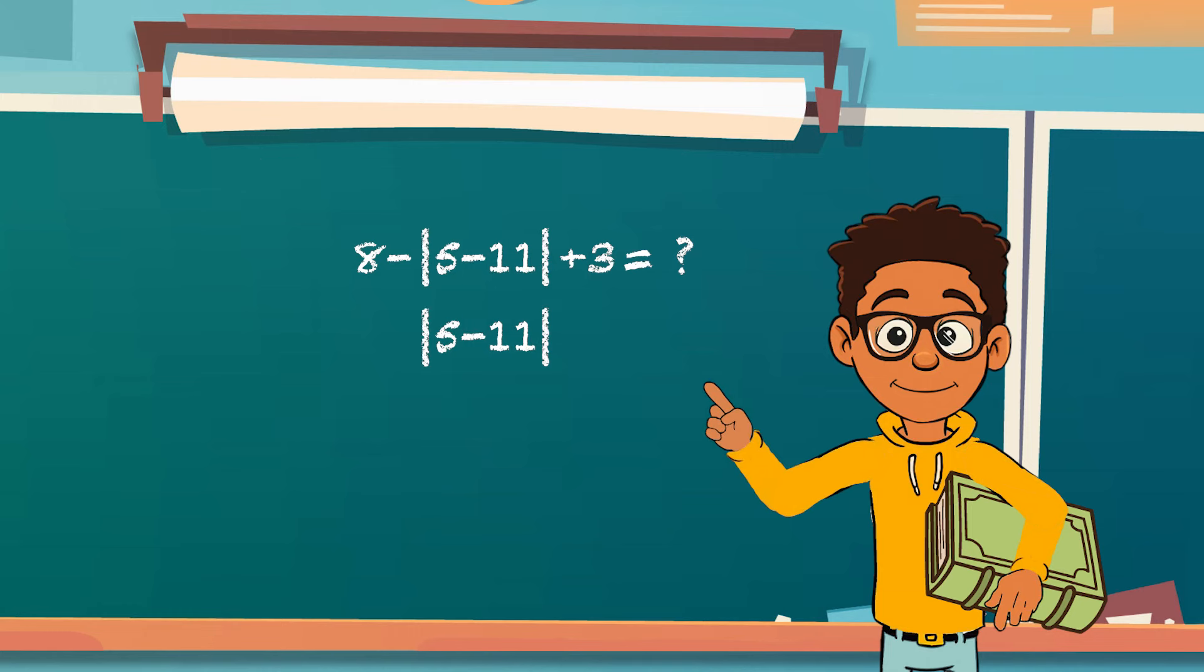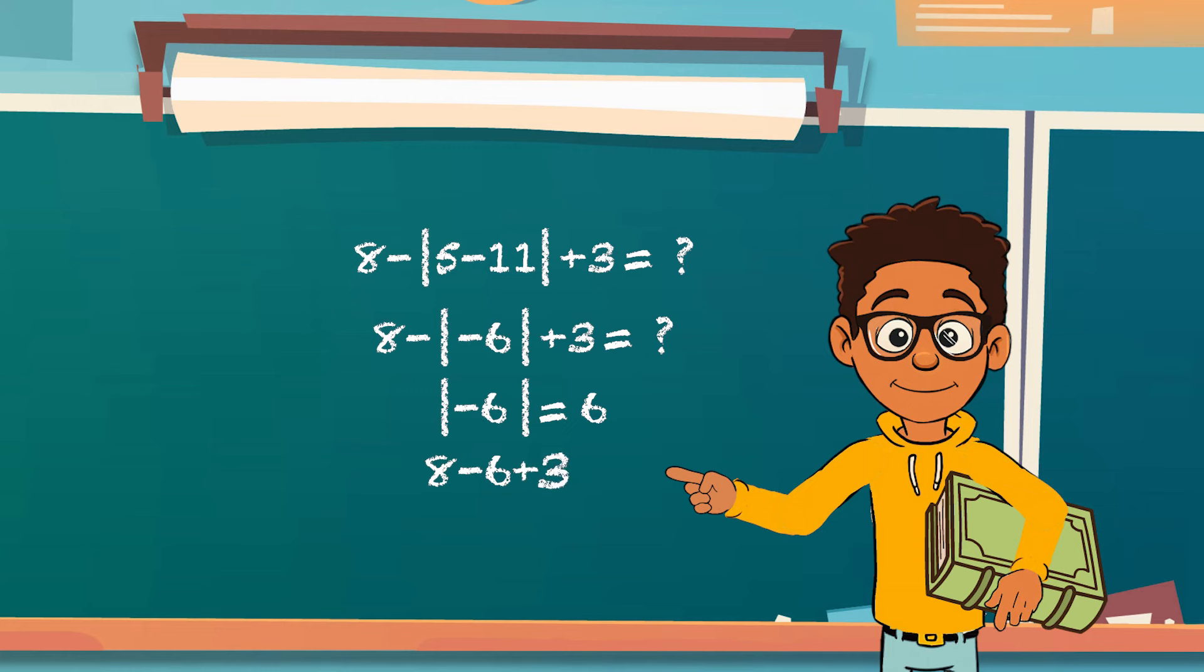5 minus 11 equals negative 6. And since the negative symbol is on the inside of the absolute value bars, we know that the absolute value of negative 6 equals 6. With that information all figured out, we are ready to solve the equation. 8 minus 6 plus 3 equals 5.